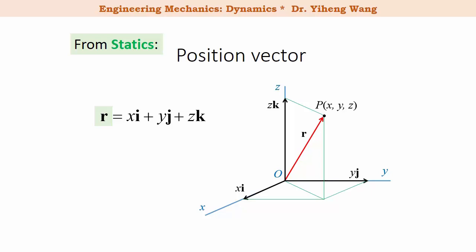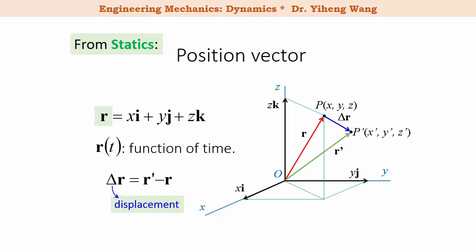As long as there's motion within the same coordinate system, position is a function of time. So after some time, this particle has moved to a new location with new coordinates, x prime, y prime, and z prime, and its position is now represented by a new position vector, r prime. The change in position of this particle, which is r prime minus r, is defined as the displacement. As you can see, displacement is also a vector.